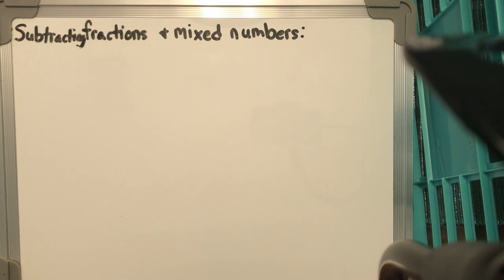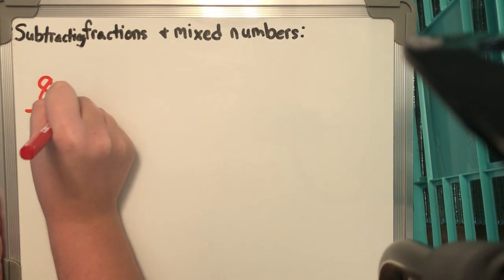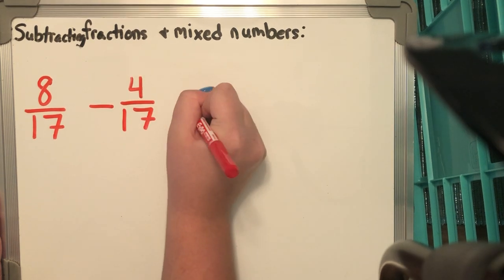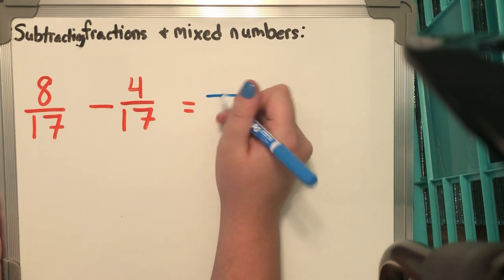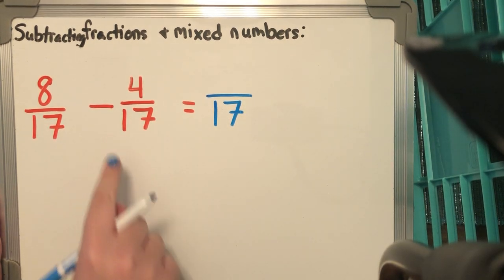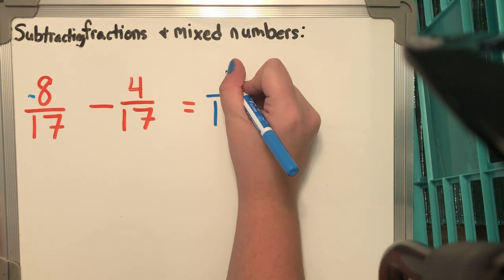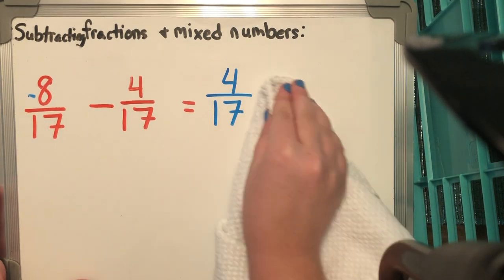Just like adding with our fractions, we're subtracting, and when we subtract we have like denominators — that's really important with fractions. So this makes it pretty simple to start. I have 8/17 minus 4/17. My denominator is going to be 17 because I have two like denominators, and all I have to do is subtract the numerators: 8 minus 4 gives me 4. So 8/17 minus 4/17 equals 4/17.